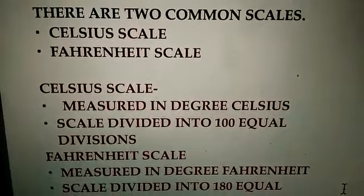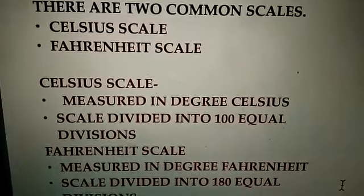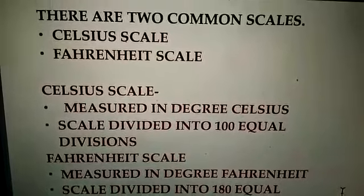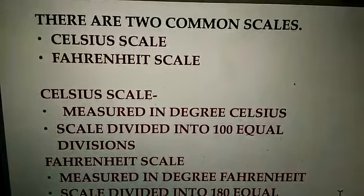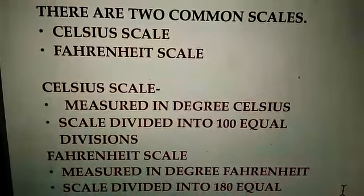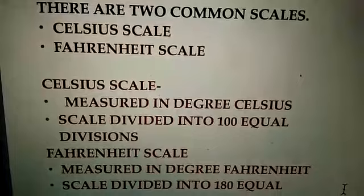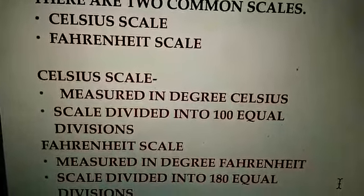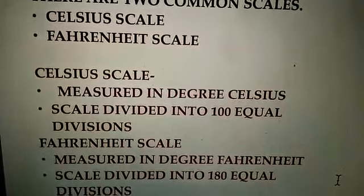There are two common scales: Celsius scale and Fahrenheit scale, as you have seen just now. This Celsius scale is measured in degree Celsius and the scale is divided into 100 equal divisions. Whereas this Fahrenheit scale is measured in degree Fahrenheit and the scale is divided into 180 equal divisions.